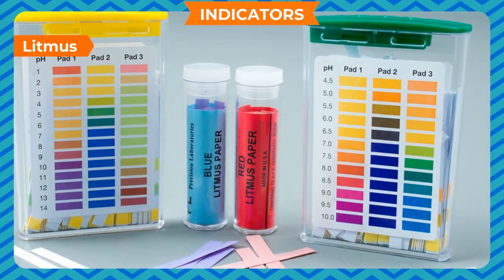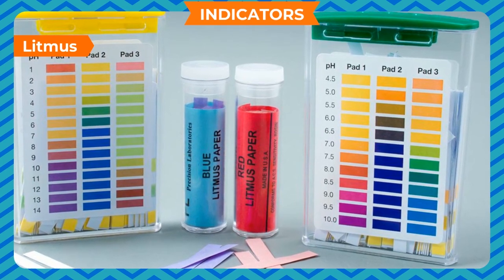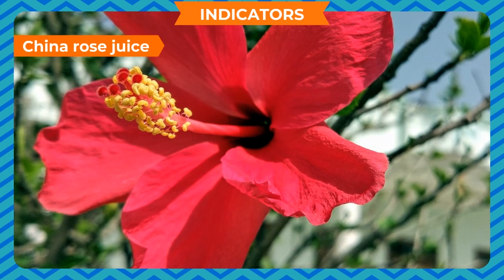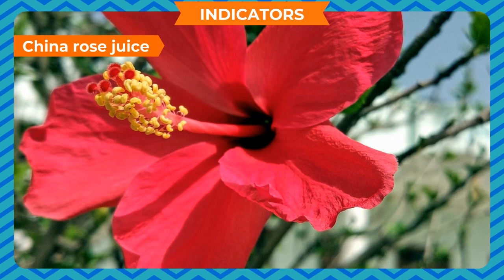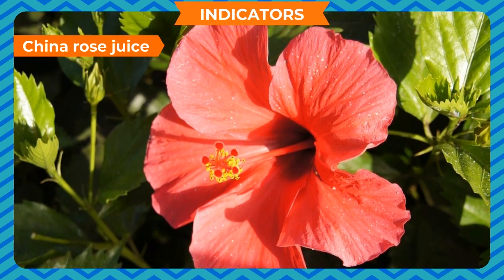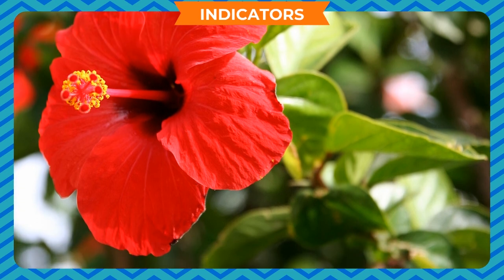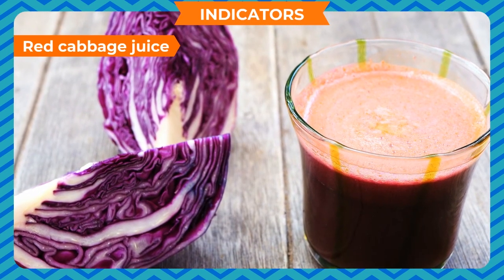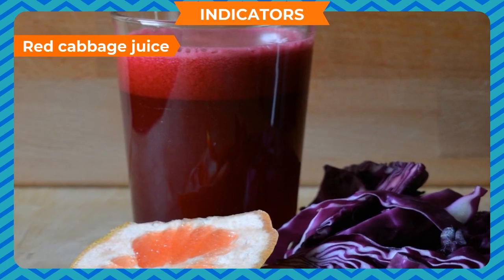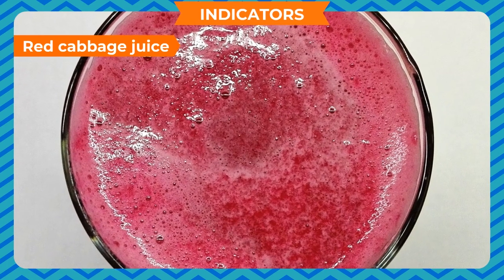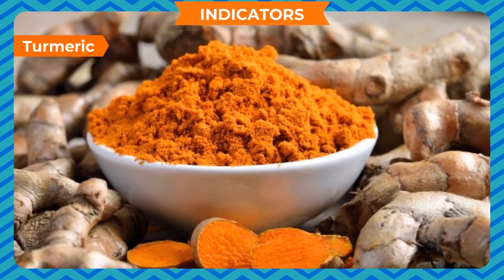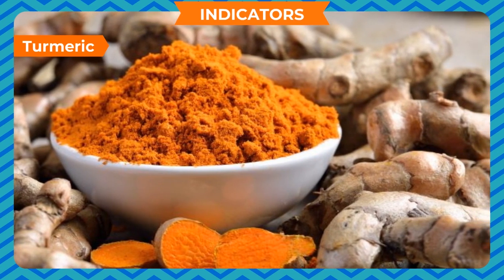Litmus is available as a solution or as litmus paper — generally available as red and blue litmus paper. China rose solution is another natural indicator — it turns green in a basic medium and magenta in an acidic solution. Red cabbage juice, which is purple in color, turns green in a basic medium and red in an acidic solution. Turmeric (haldi) is a natural indicator — it is bright yellow in color and changes to brick red in the presence of a base.